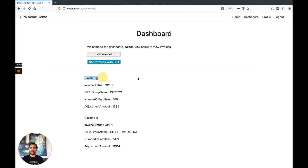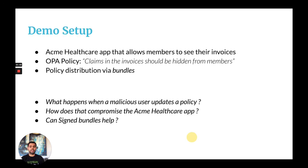If we press the button again, you can see that the claims are still hidden, which means those corrupt policies fed by the attacker are not being enforced by OPA. In this way, we have prevented an attacker from feeding corrupt policies into OPA by using signed bundles.